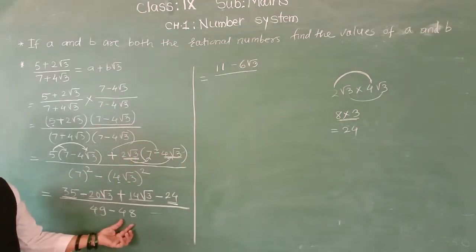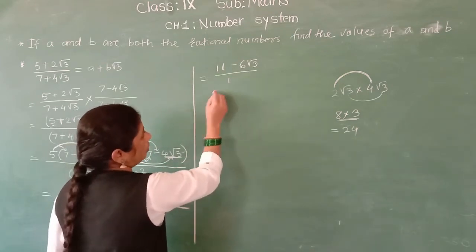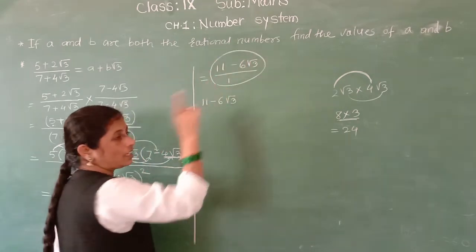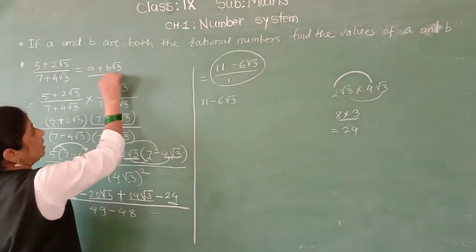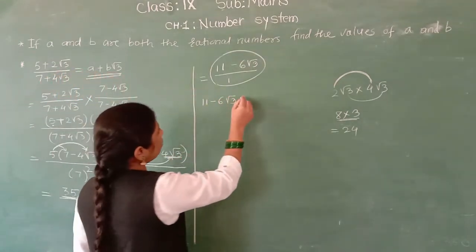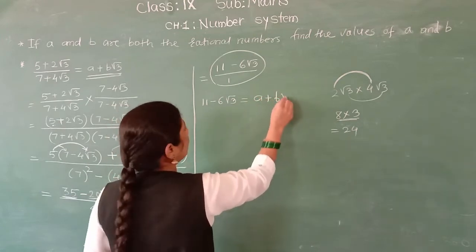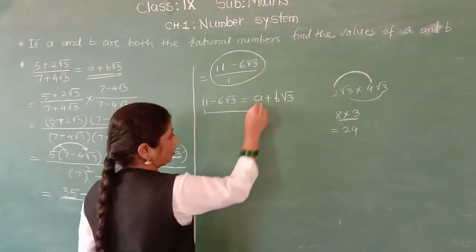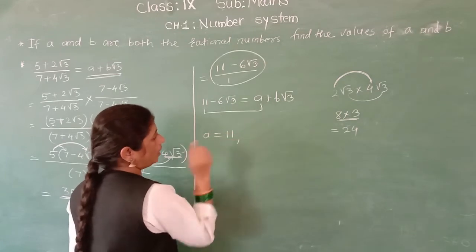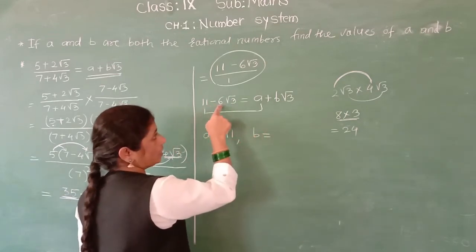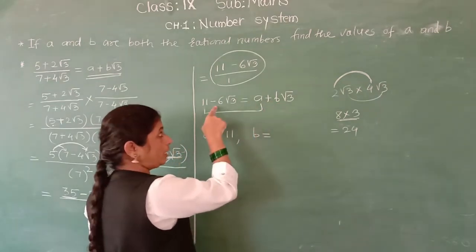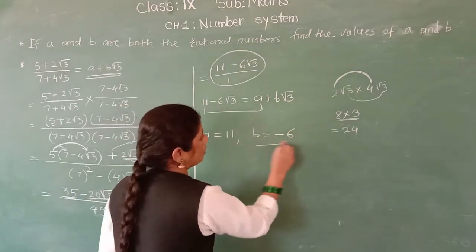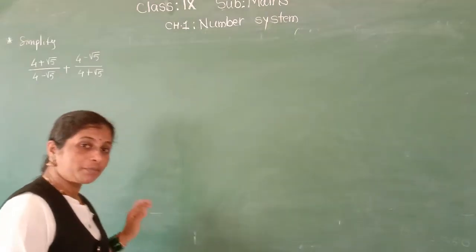Now you have got this final product: 11 minus 6 root 3. Now you have to compare with the right side, which is A plus B root 3. So what is your A? A is your 11. And what is your B? Here a negative sign is there, so B is minus 6.